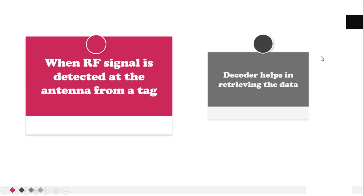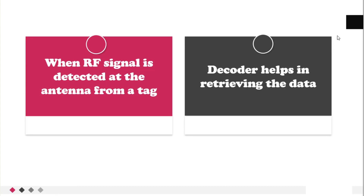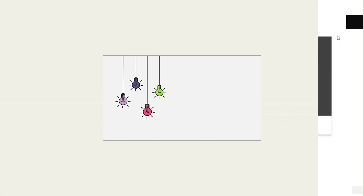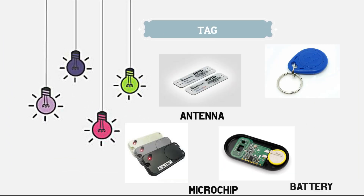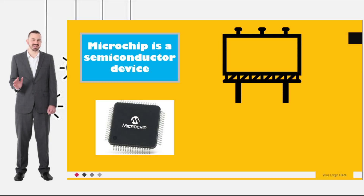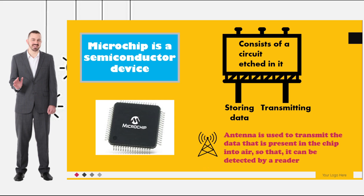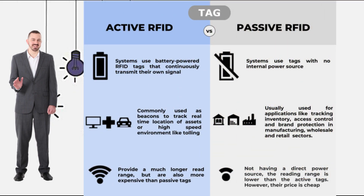When an RF signal is detected at the antenna from a tag, the decoder helps in retrieving the data. The tag consists of a microchip, antenna, and battery. The microchip is a semiconductor device with a circuit and some kilobytes of memory storage for storing and transmitting data. The antenna transmits the data present in the chip into the air so it can be detected by a reader.